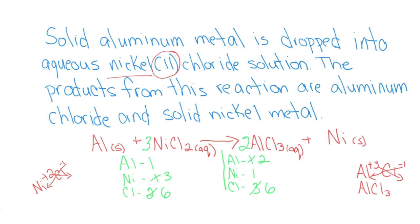So we'll start with aluminum. I need 2 on the reactant side. So I put a coefficient of 2 there, and that gives me 2 aluminum.